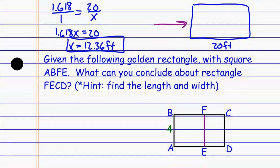Here's an interesting one. Given a golden rectangle with square ABFE inside it, I want to conclude something about the smaller rectangle on the side. Looking at it, you're probably guessing that it's also a golden rectangle based on the ratios of the sides — we just have to prove it. I know right now that each of these side pieces is 4, and since I'm dealing with a rectangle and a square, this side is also 4. What I don't know is the length of this entire longer side.